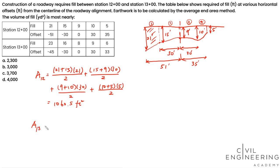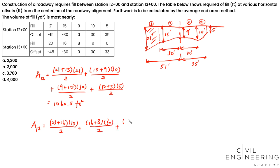We use the same approach for station 13. The first trapezoid is (23+16)×15/2, plus (16+8)×30/2, plus (8+9)×30/2, plus (9+6)×3/2. The end area at station 13 is 930 square feet.